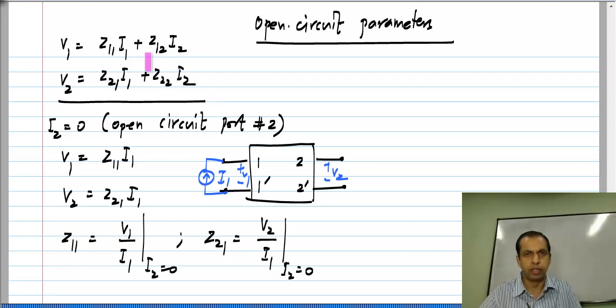So, you have Z11 and Z21. Z11 you can see is nothing but the resistance looking into port 1 with port 2 open circuited and Z21 is the trans resistance from port 1 to port 2 with port 2 open circuited.